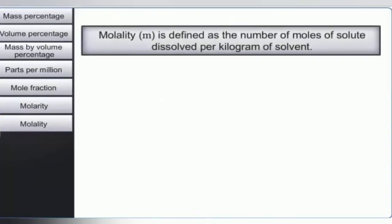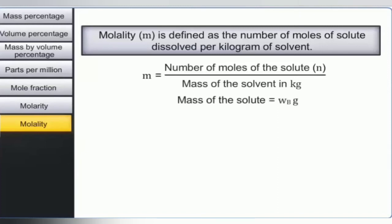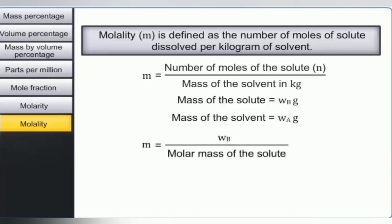Another important method of expressing concentration is molality, represented by small m. Molality is defined as the number of moles of solute dissolved per kilogram of solvent. Mathematically, it is represented as m equals the number of moles of solute divided by the mass of solvent in kilograms. If Wb grams of solute is dissolved in Wa grams of solvent, then molality equals (Wb / molar mass of solute) multiplied by (1000 / Wa).